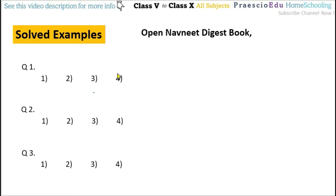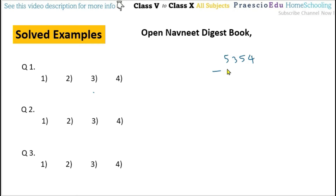Question number one: an article bought for rupees 4963 and sold for 5354. Since the selling price is more, there is a profit. To calculate the profit, we subtract the cost price from the selling price: 5354 minus 4963 gives 391. So the profit is rupees 391, which is given in option number 2.